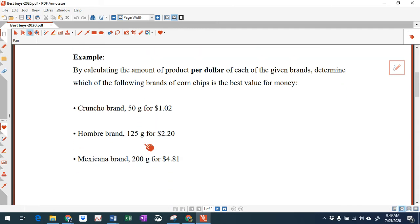Okay, so we've got three brands of product here, corn chips, and you've got to decide which one is the best value: Cruncho brand, Hombro brand, or Mexicana brand. The question says calculate the amount of product per dollar. So that means you've got to find out how much you're getting for one dollar of the item.